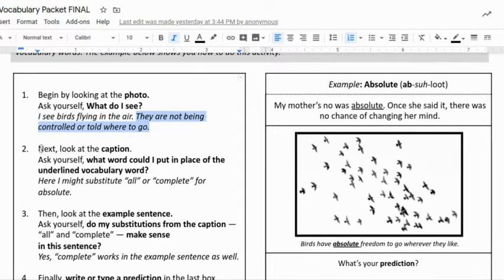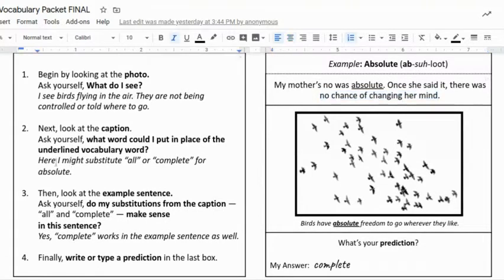Number two says next look at the caption. Ask yourself what word could I put in place of the underlined vocabulary word. Right here's the caption, and by the way our word is absolute. It says here 'my mother's no was absolute. Once she said it there was no chance of changing her mind.' So here I said I might substitute 'all' or 'complete' for absolute, so it might sound like this: 'my mother's no was complete. Once she said it there was no chance of changing her mind.'